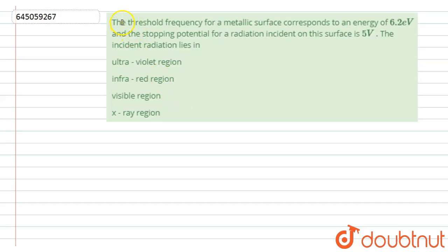Hello students, so the question is: the threshold frequency for a metallic surface corresponds to an energy of 6.2 electron volt. The stopping potential for radiation incident on the surface is 5 volt. Then we have to tell here the incident radiation lies in options are ultraviolet region, infrared region, visible region and x-ray region.